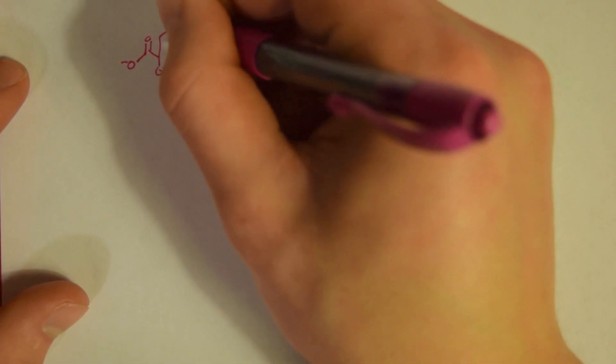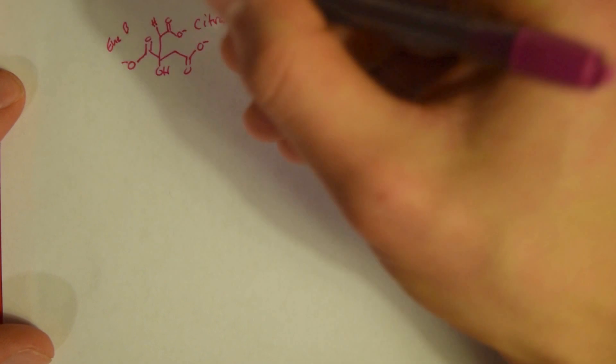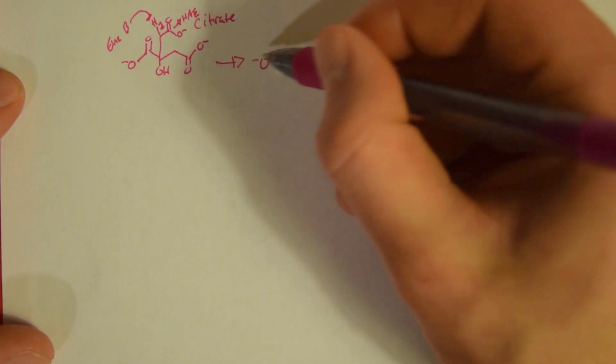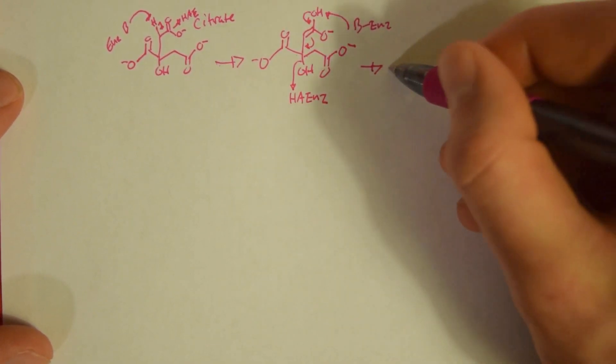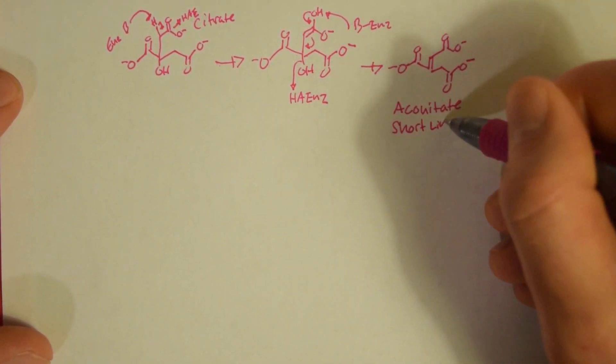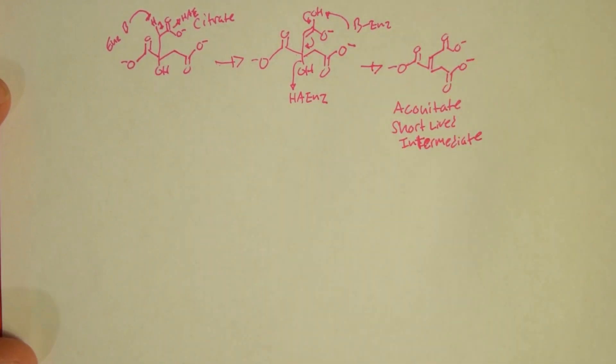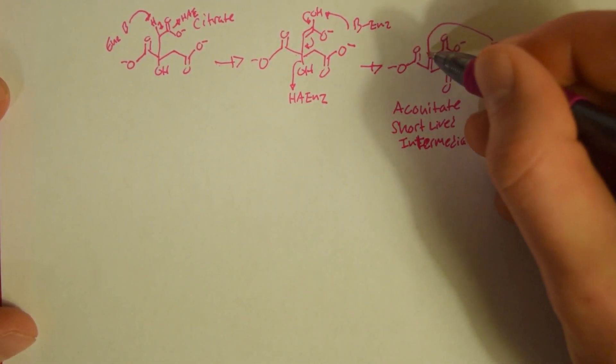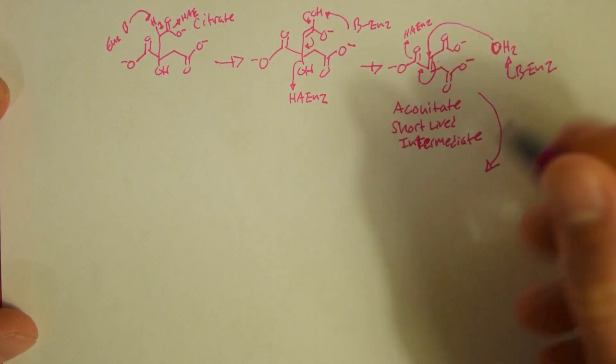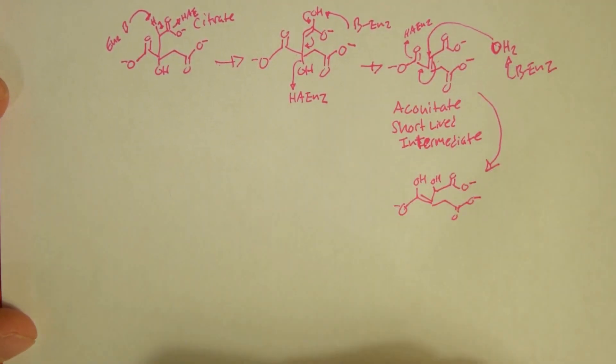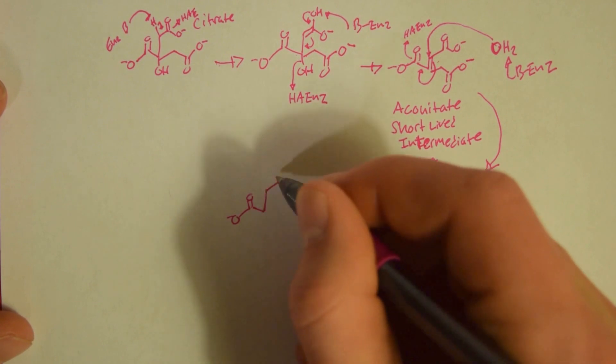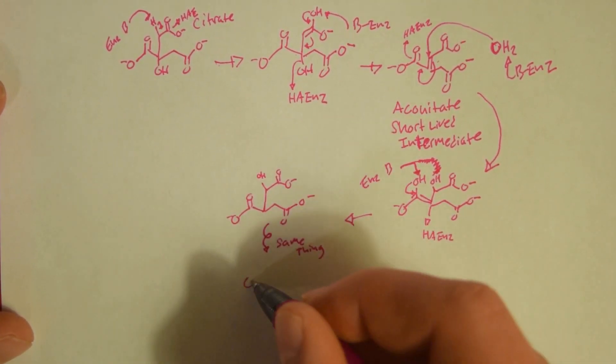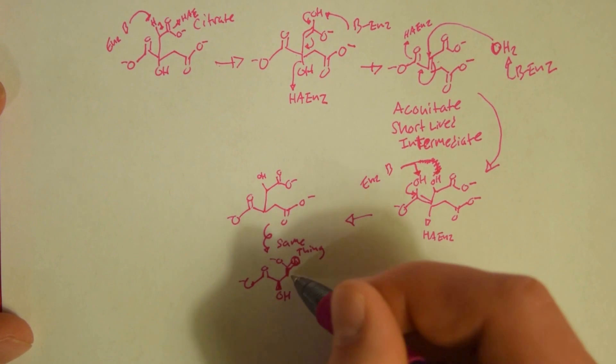So now we're going to take the citrate and we're going to go through several intermediates. One of them being a connotate, which is a short-lived intermediate. And finally, we're going to end up with isocitrate, which is an isomer of citrate.